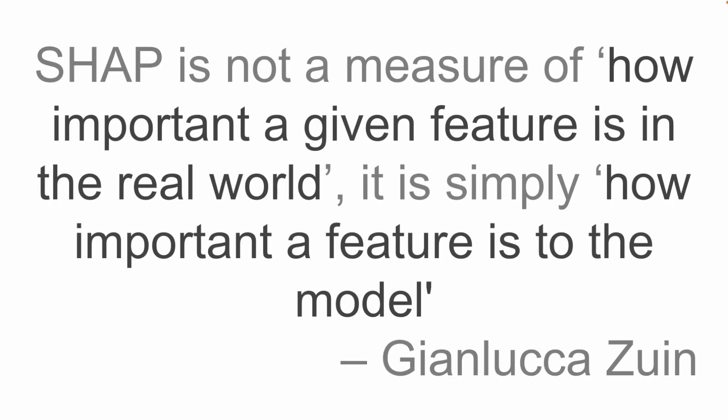This leads us to our third limitation: SHAP cannot be used for causal analysis, which is the process of finding the true cause of an event. SHAP can tell you how important a model feature is to a prediction — not how important that feature is to the actual target variable. As one quote from the SHAP GitHub repo puts it: SHAP is not a measure of how important a given feature is in the real world; it is simply how important a feature is to the model.